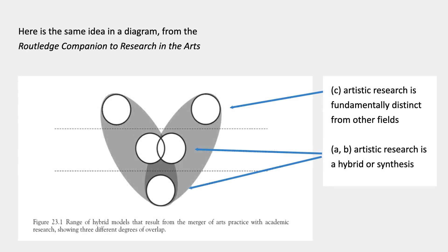Here's the same idea as a diagram from a book called the Routledge Companion to Research in the Arts, which is a good one to look at if you want to explore this subject. It's a kind of Venn diagram where at the top, artistic research is fundamentally different from other fields; then maybe they're blended; and at the bottom, maybe they're the same, or there's a hybrid of them — the same three choices as the previous slide.